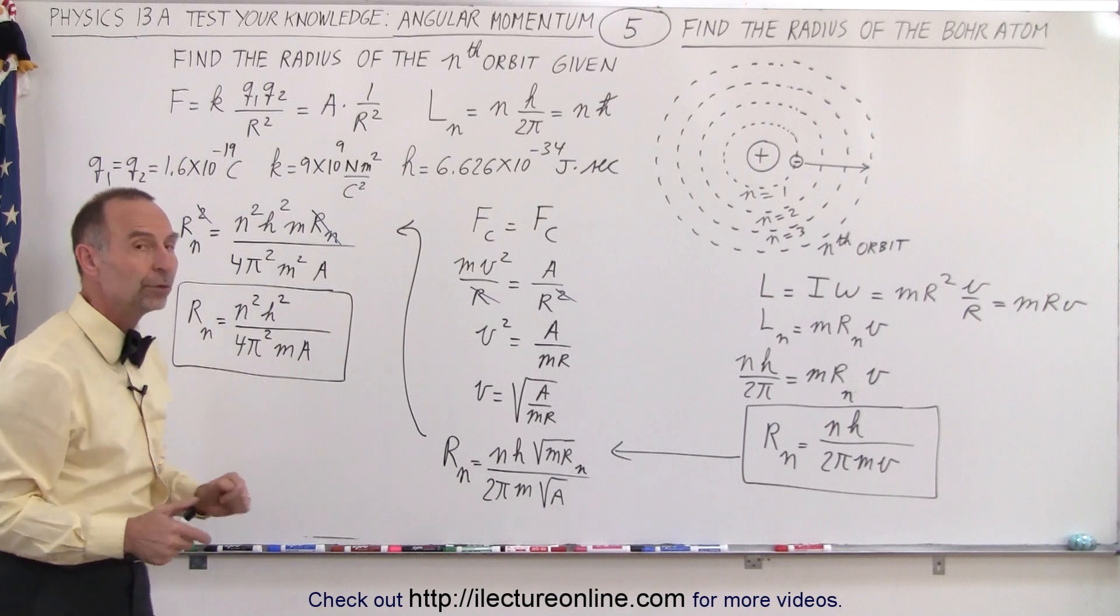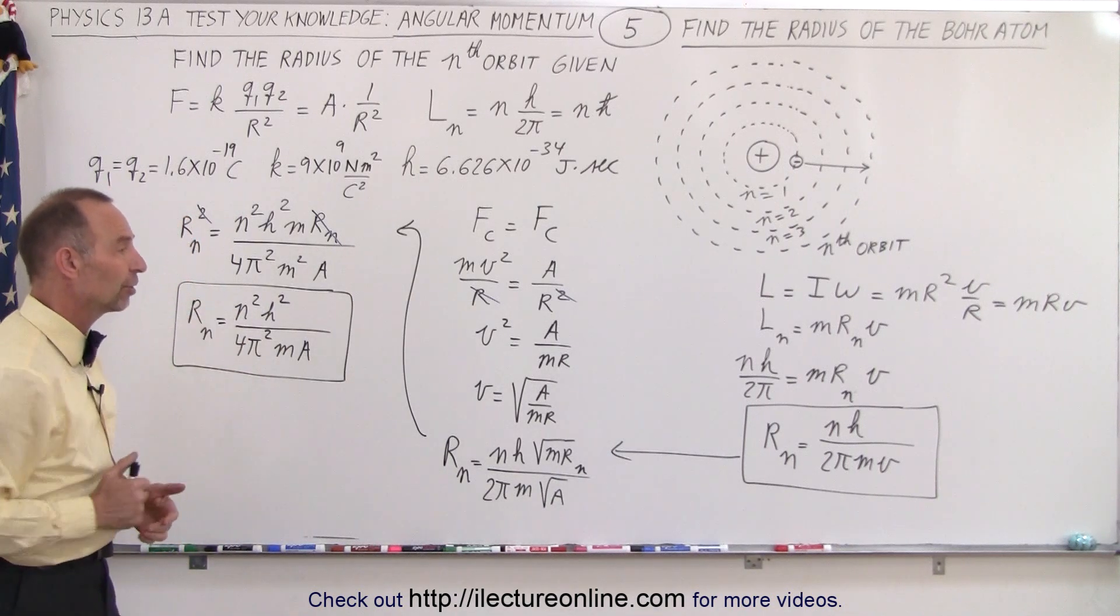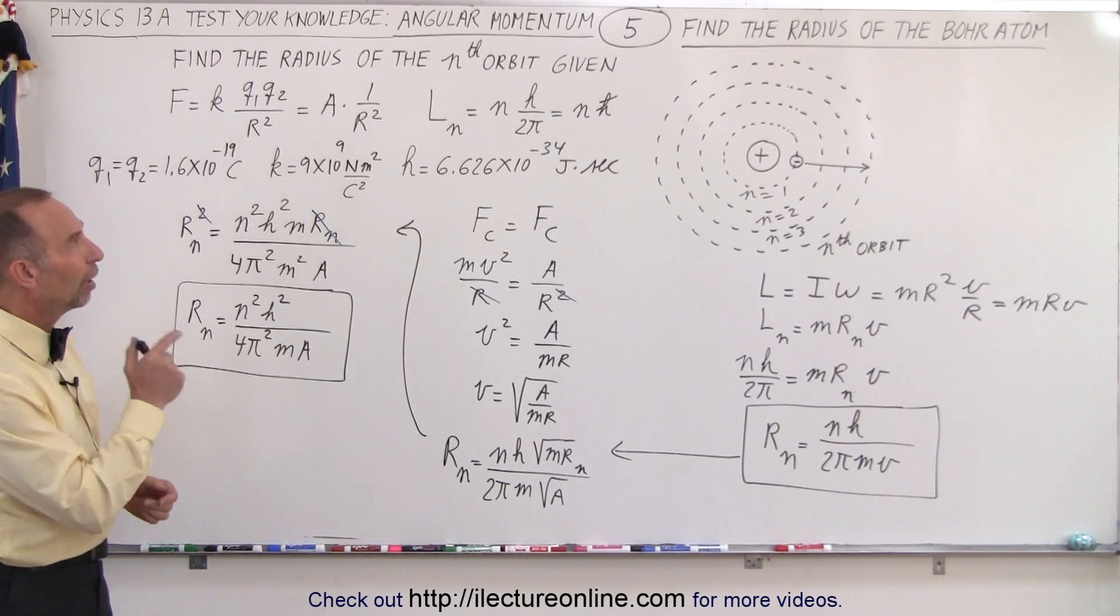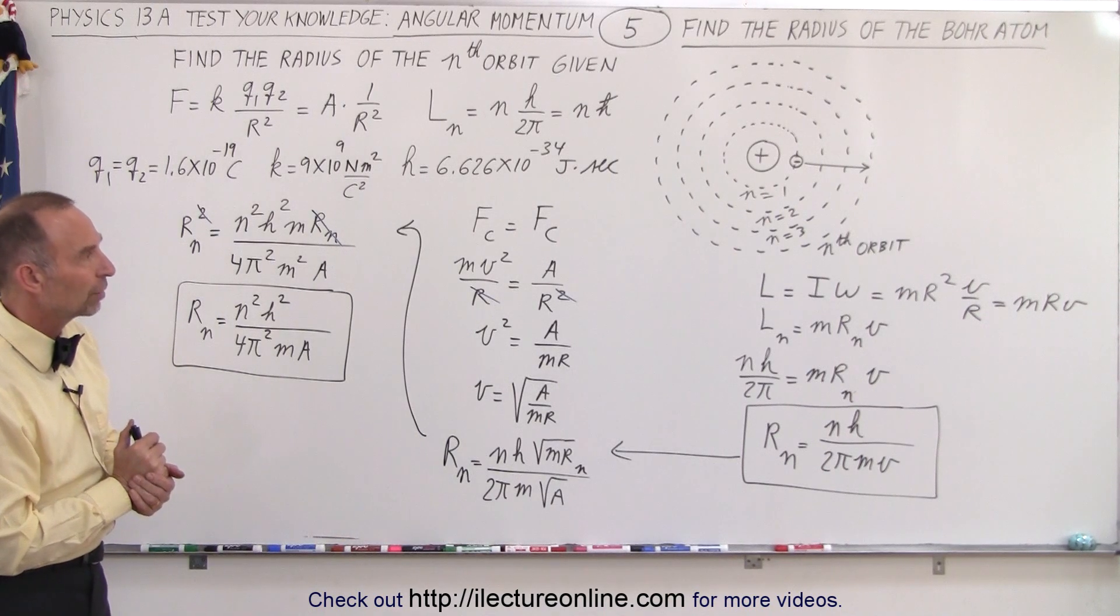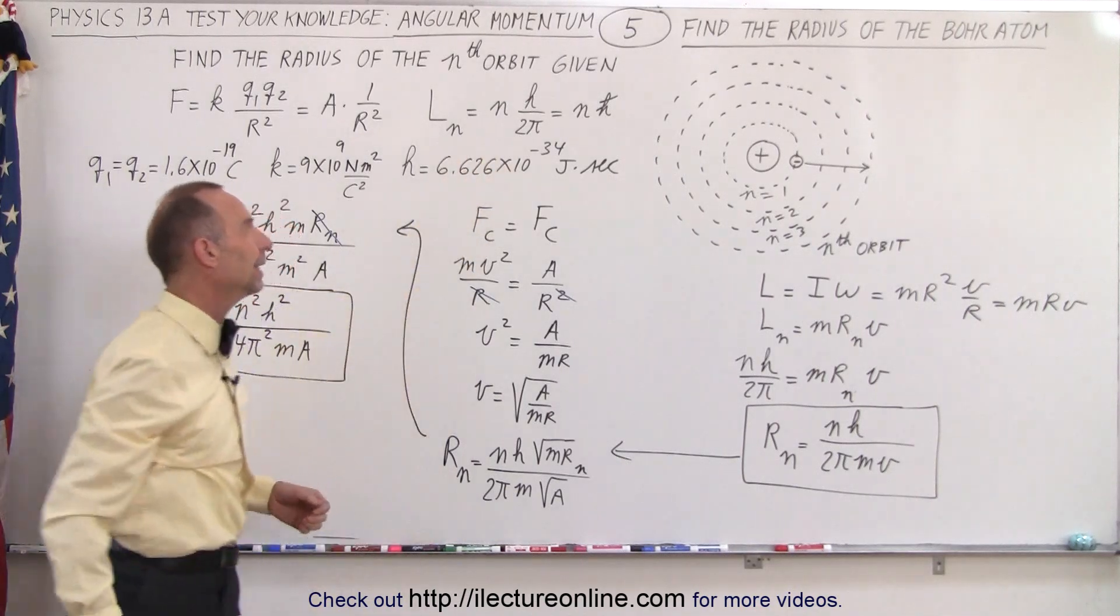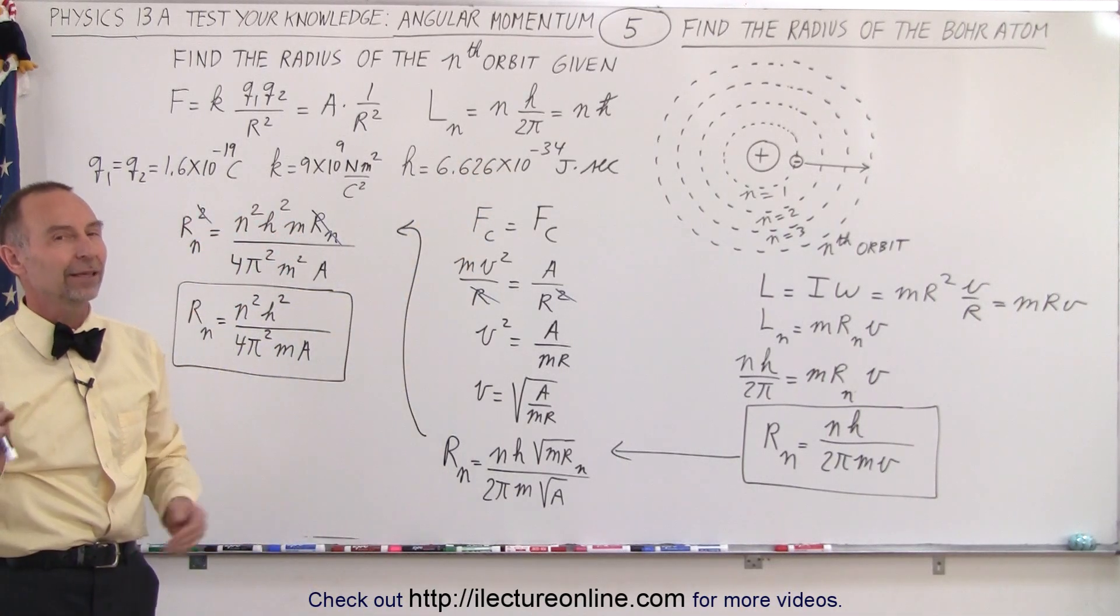Therefore, they were able to establish the radius of the Bohr atom, understanding that the angular momentum of the electron would always be quantized according to this concept right here, nh over 2π. And that is how it was done.